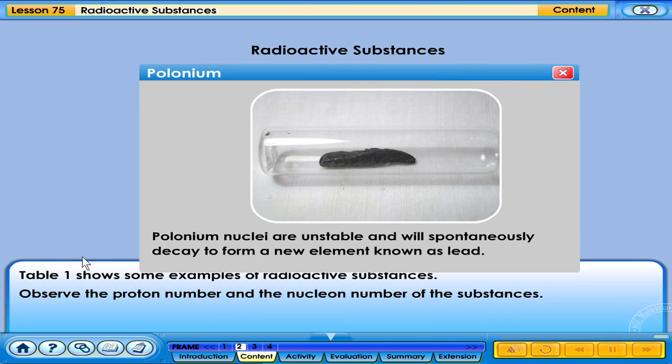Polonium nuclei are unstable and will spontaneously decay to form a new element known as lead.